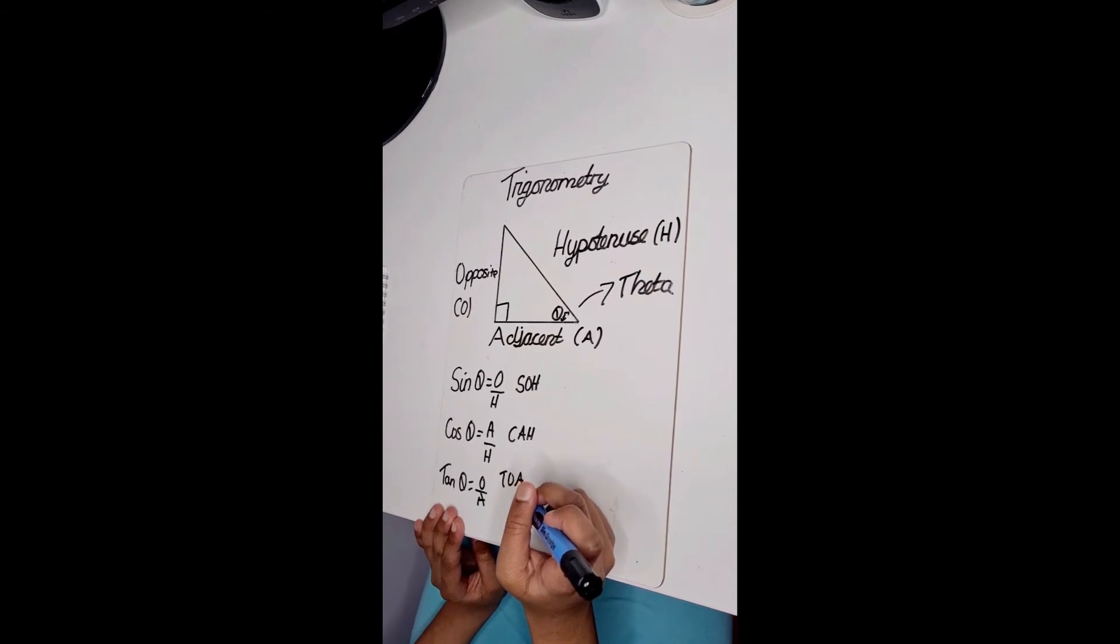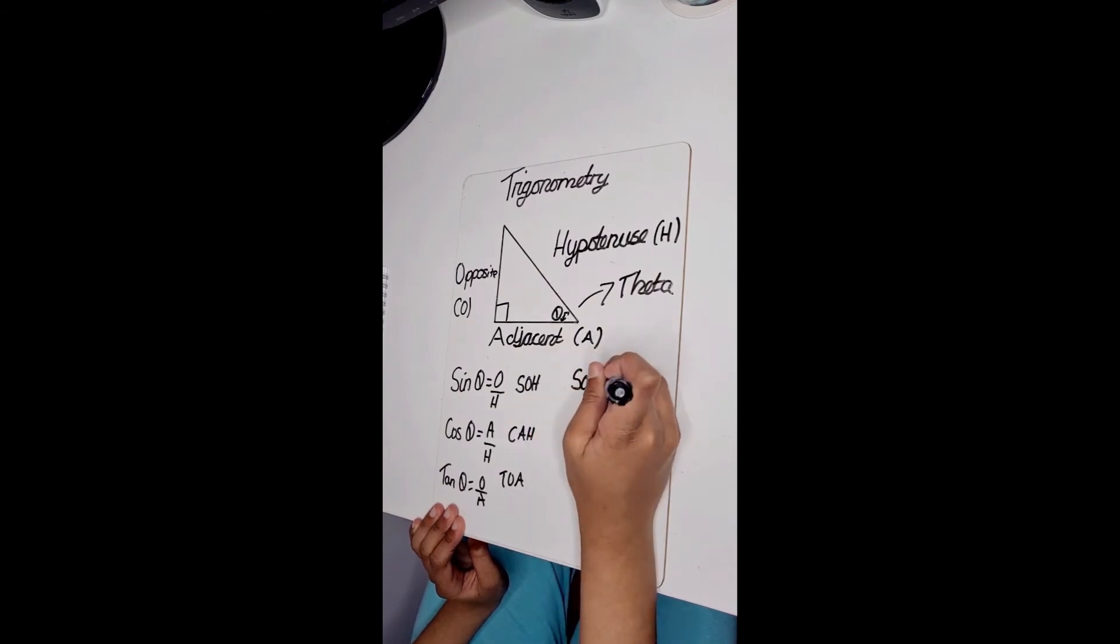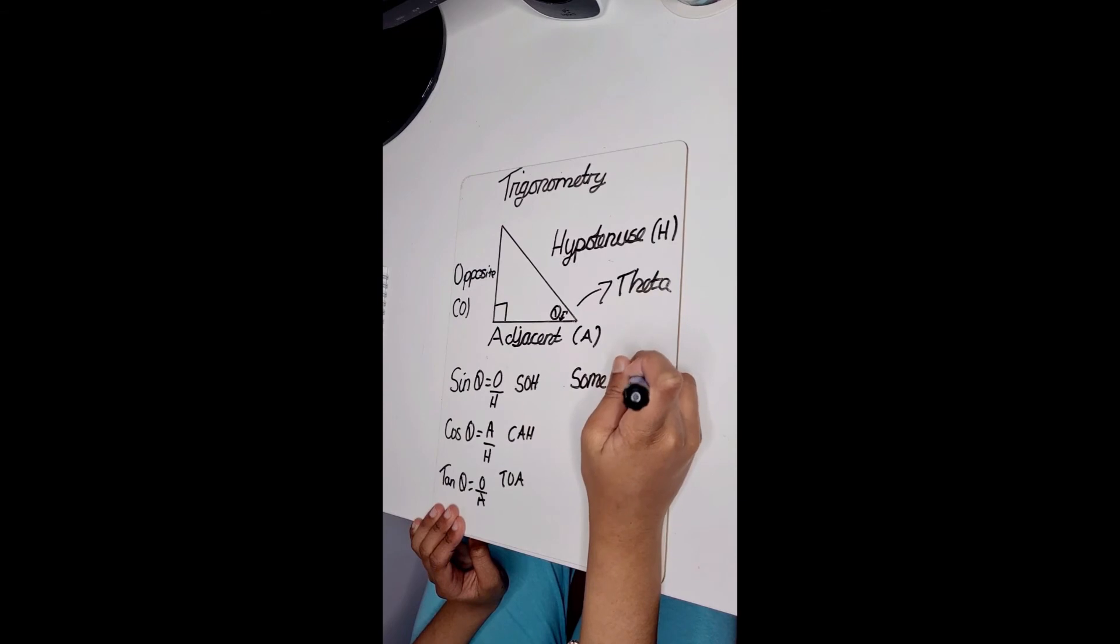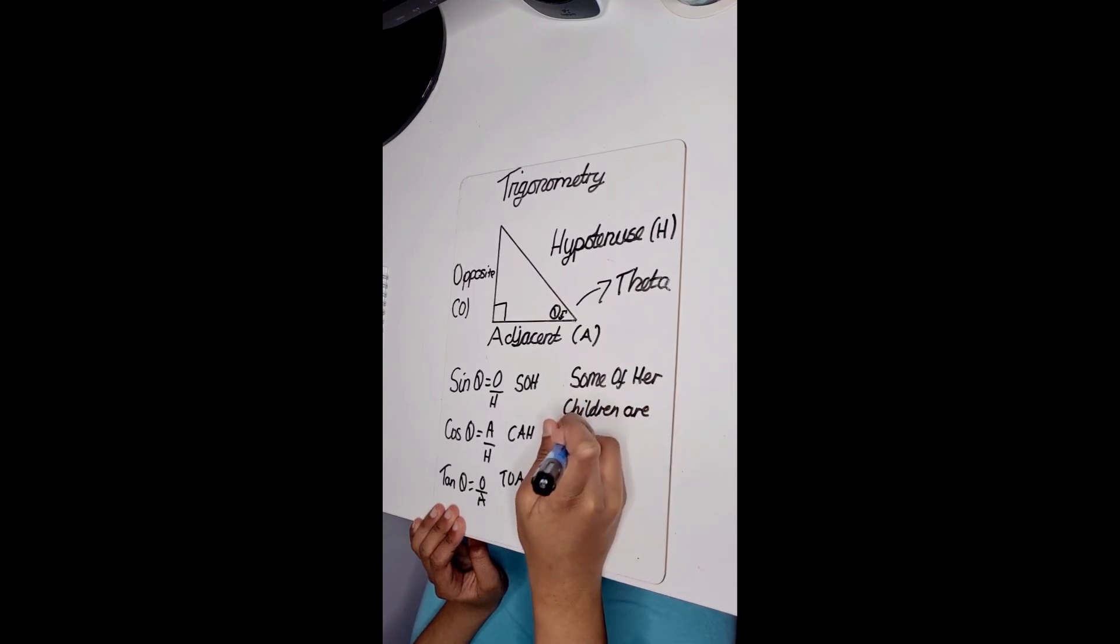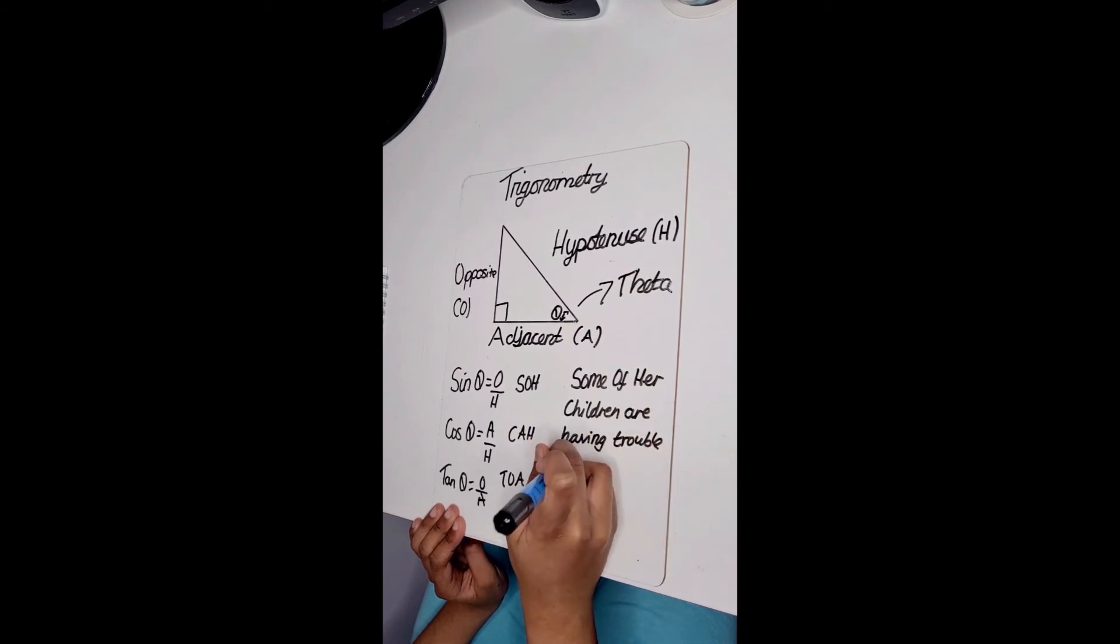An easy way to learn the order of sine, cos, tan is to remember the following: Some of her children are having trouble over algebra.